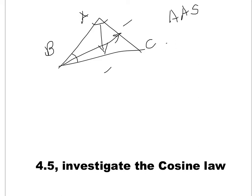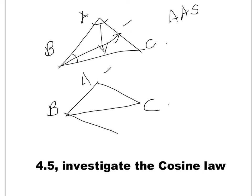Another case where you can use sine law is in a triangle like ABC, if you have two sides — let's say AB and BC — and an angle in front of either one of these two sides, let's say angle C which is in front of AB, or angle A which is in front of BC. Then you can use sine law. This is called SSA: side, side, angle.